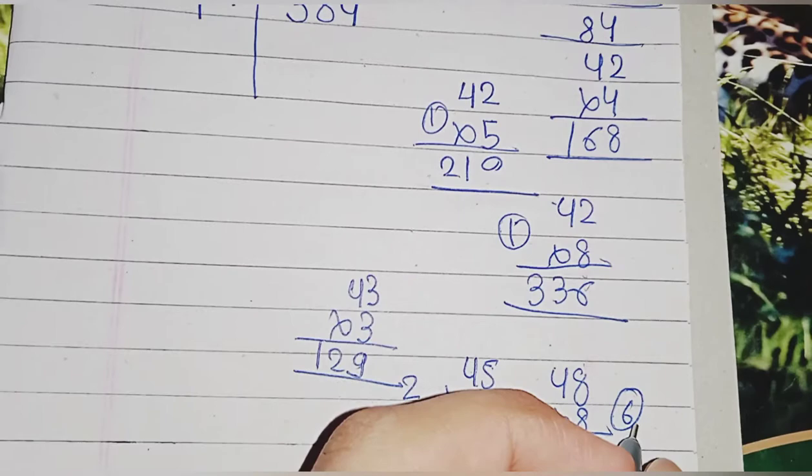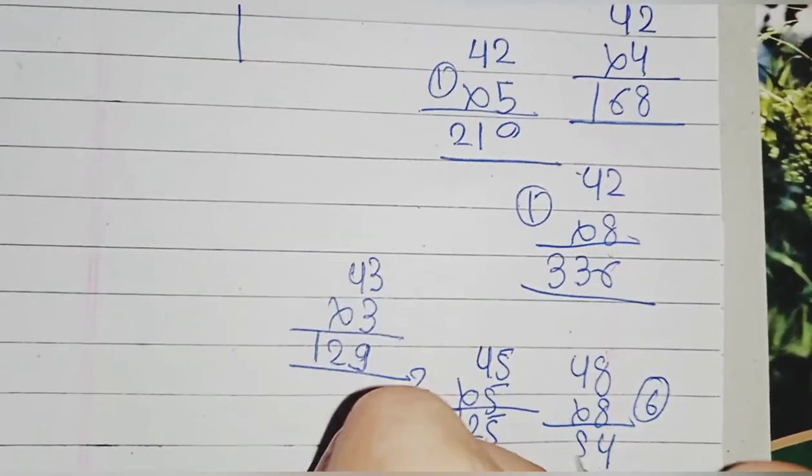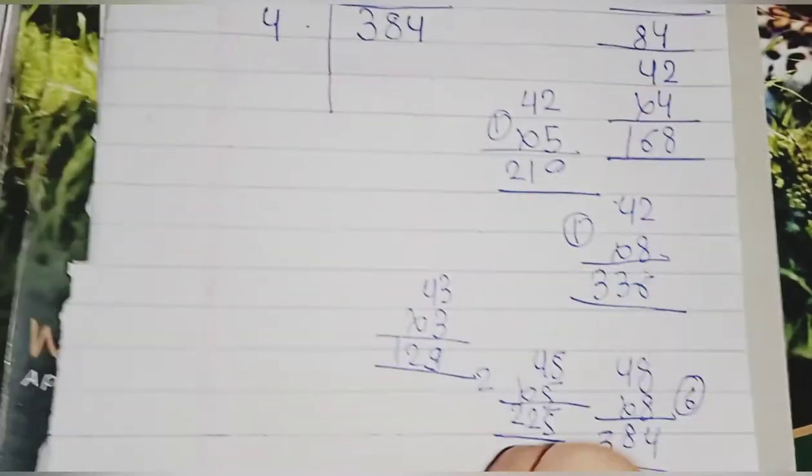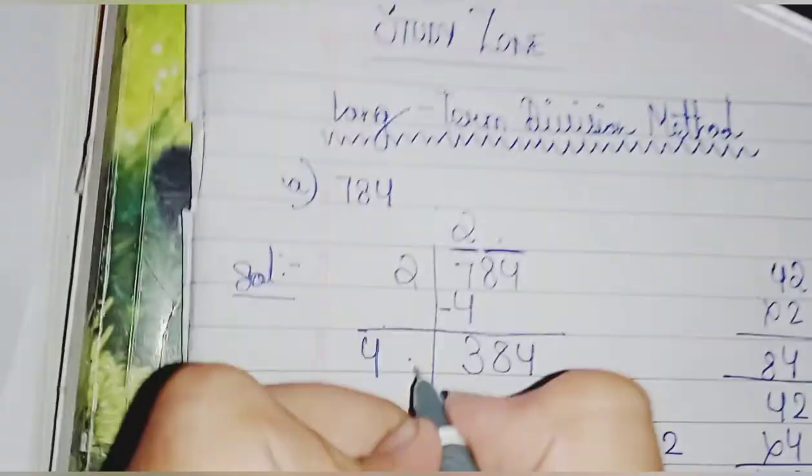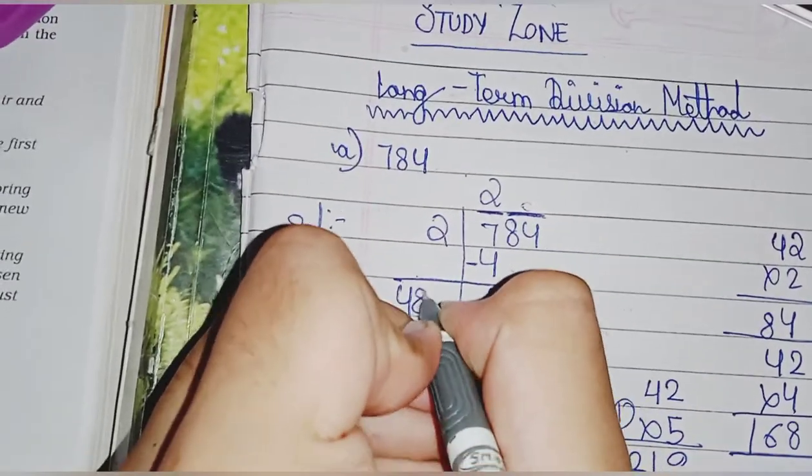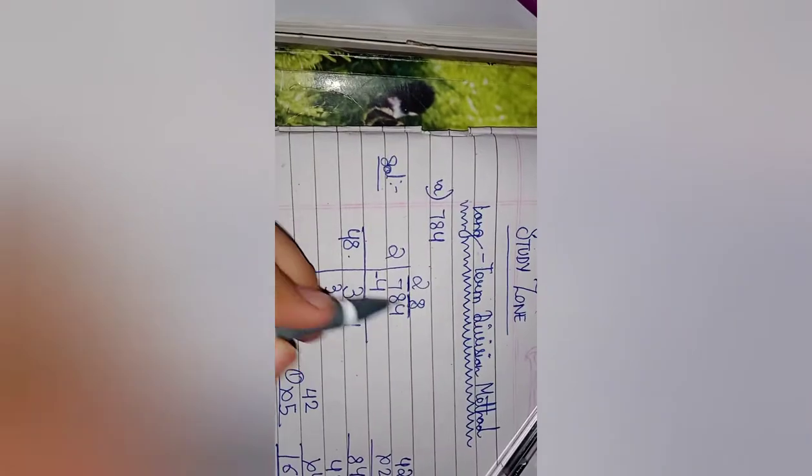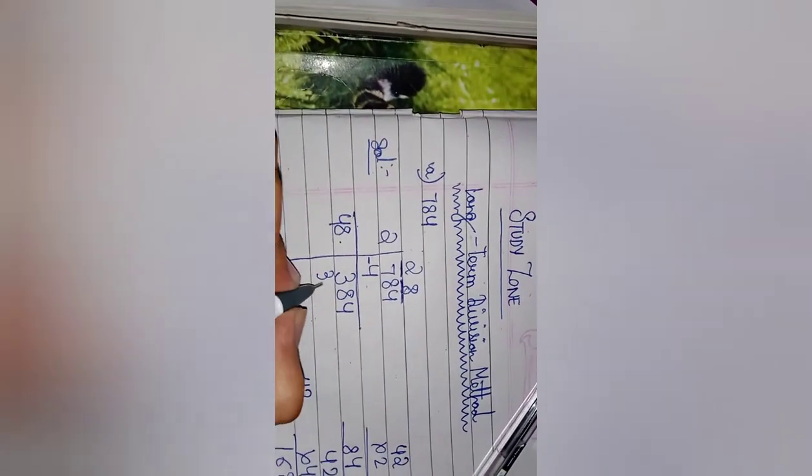So here you will write 48 and 8 in this place, then here you have to write 384. Here again you have to subtract it.